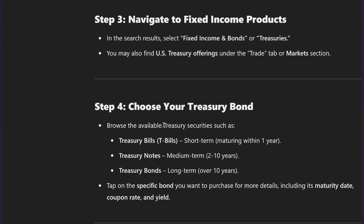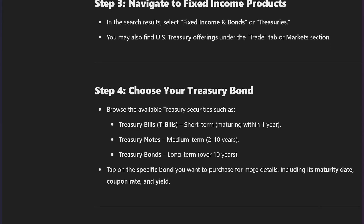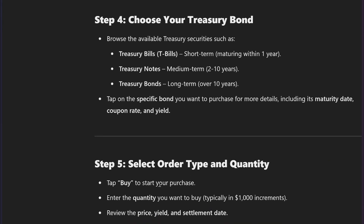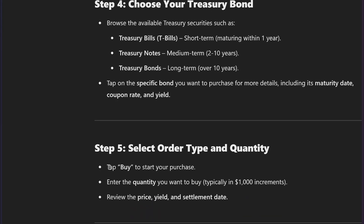Browse the available treasury securities such as Treasury Bills, Treasury Notes, and Treasury Bonds. Tap on the specific bond you want to purchase to view more details, including its maturity date, coupon rate, and yield.